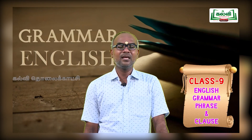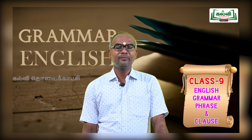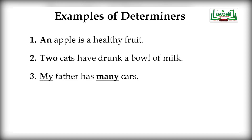Examples of determiners in sentences: 'An apple is a healthy fruit' — here, 'an' is the determiner that introduces the noun 'apple.' 'Two cats have drunk a bowl of milk' — 'two' is the determiner introducing the noun 'cats.' 'My father has many cars' — here, 'my' is a possessive determiner and 'many' is a quantifier. Both 'my' and 'many' are determiners introducing the nouns 'father' and 'cars.' Determiners play a vital role in a sentence.